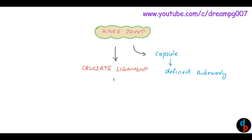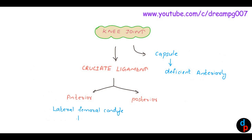There are two cruciate ligaments in the knee: the anterior cruciate ligament and the posterior cruciate ligament. The anterior cruciate ligament runs from the lateral femoral condyle to the anterior intercondylar area of the tibia. The posterior cruciate ligament runs from the medial femoral condyle to the posterior intercondylar area of the tibia.